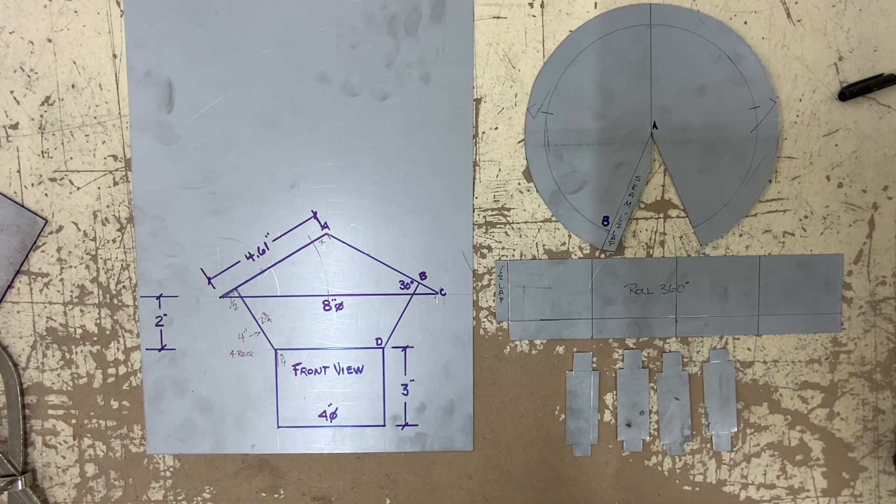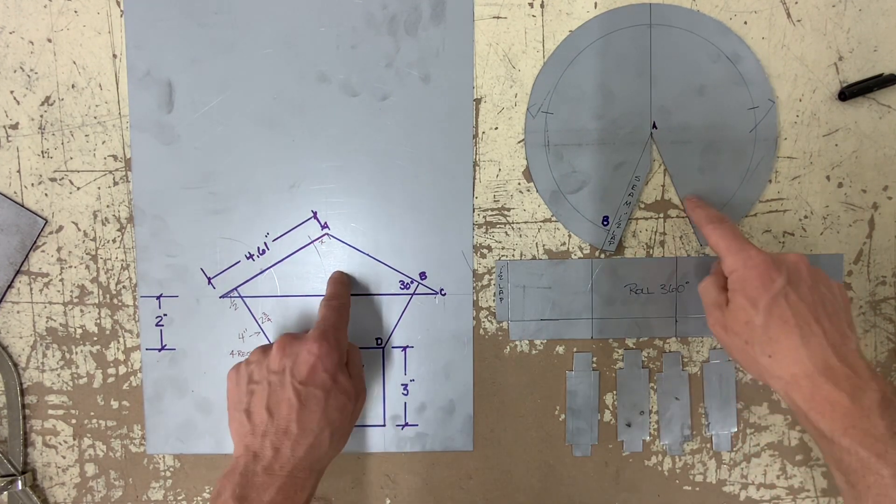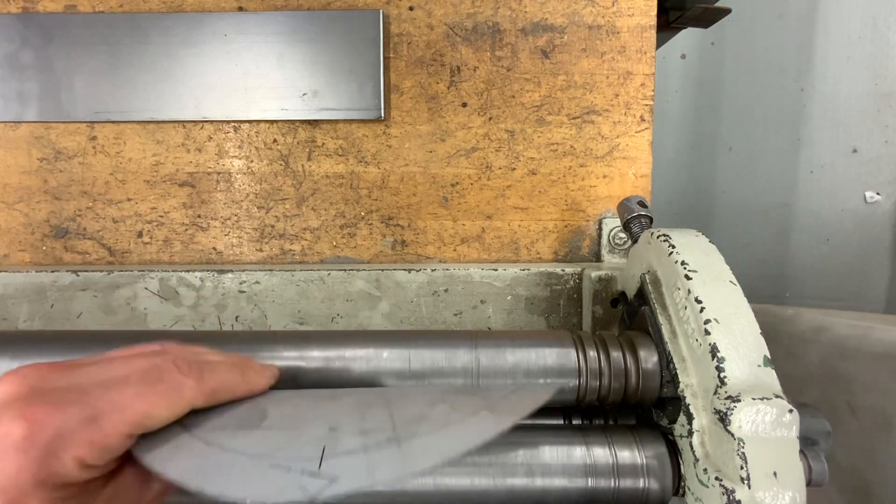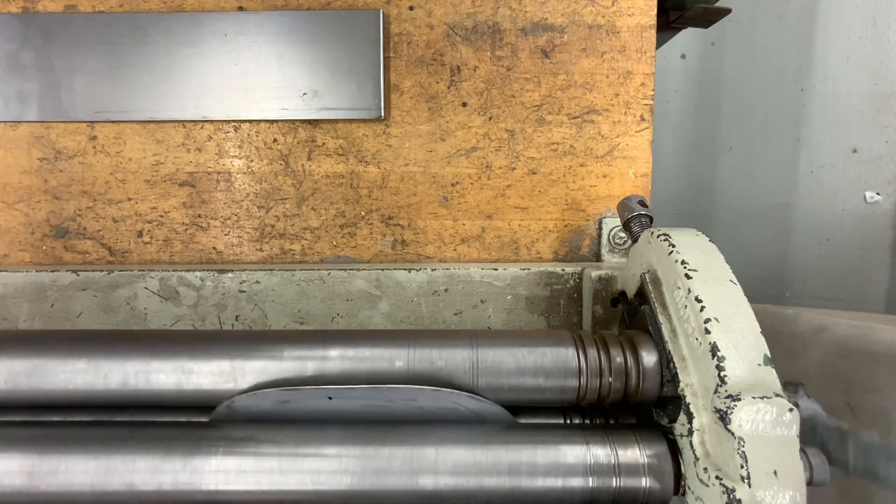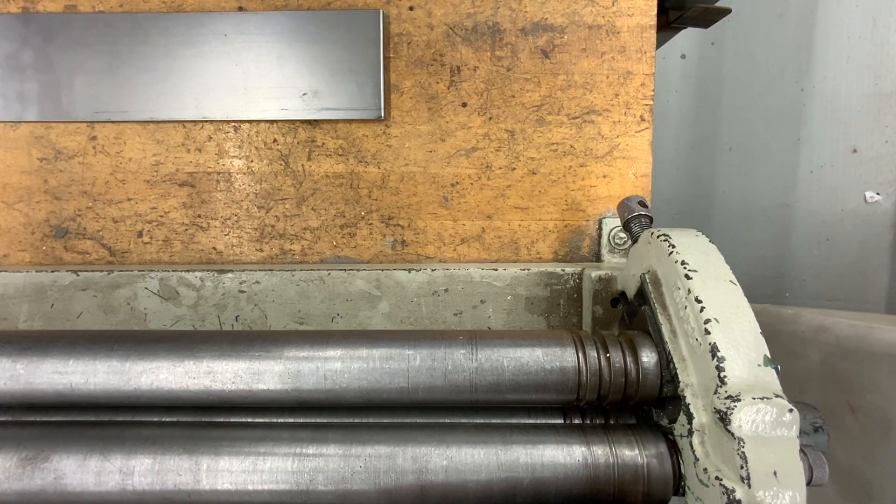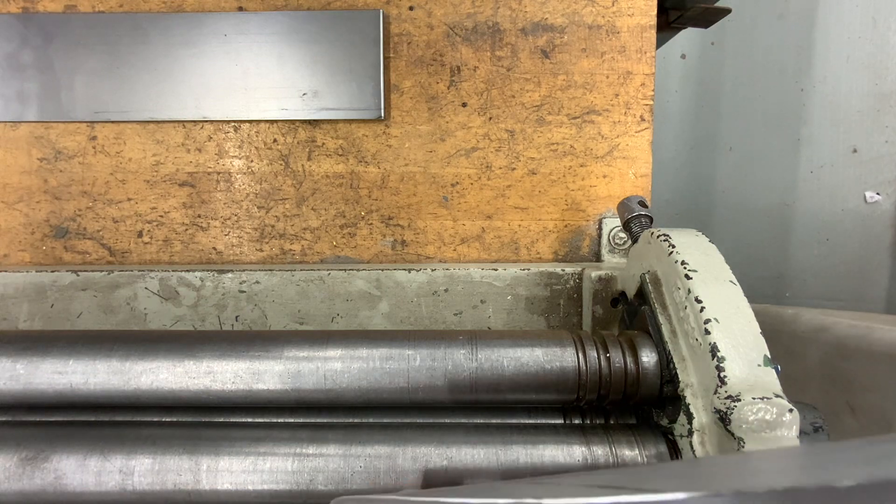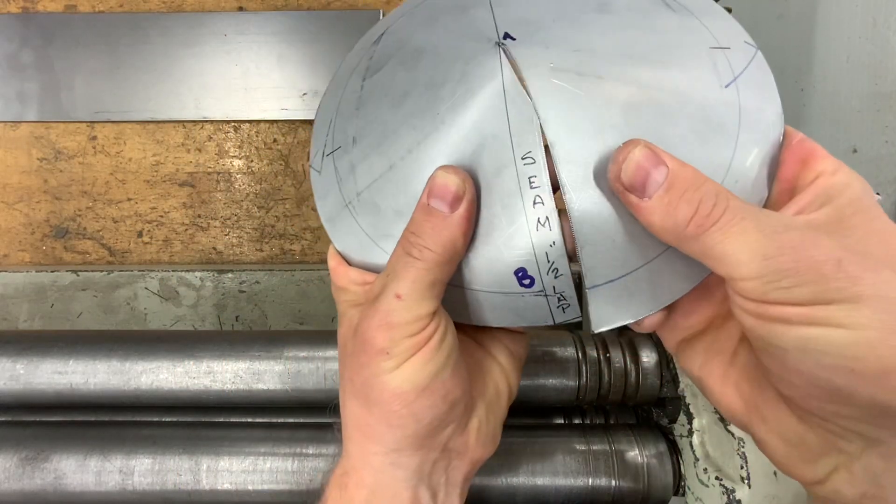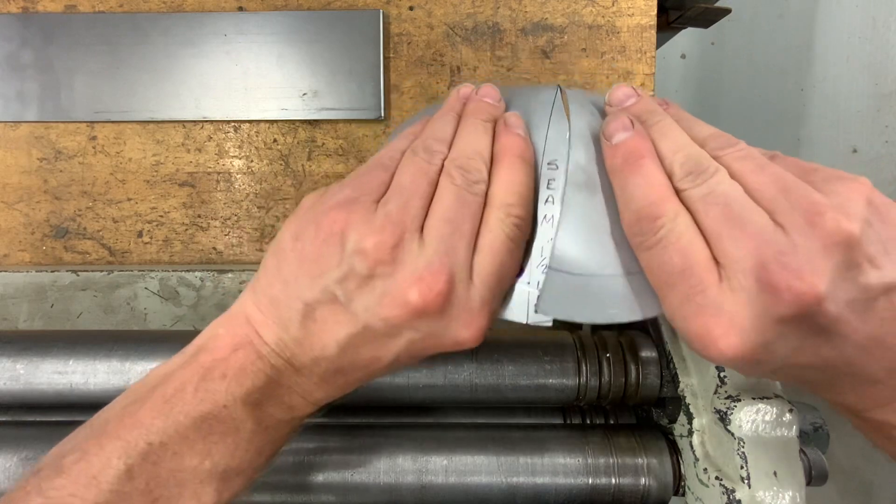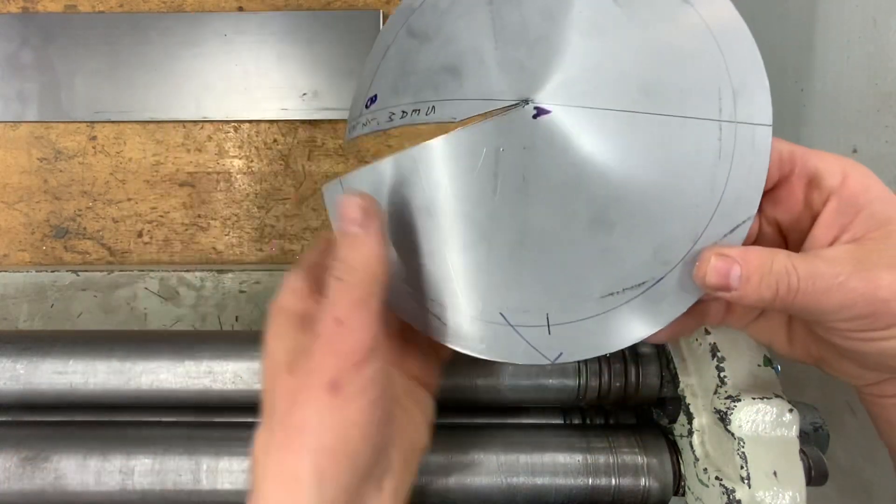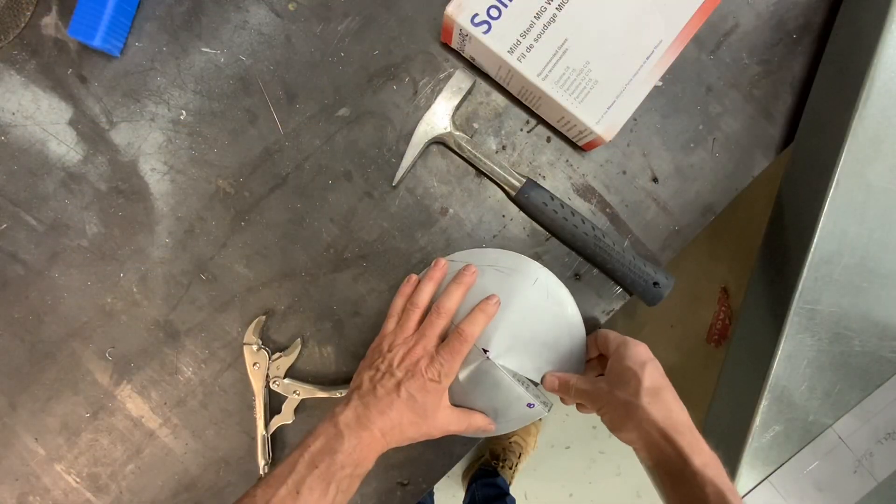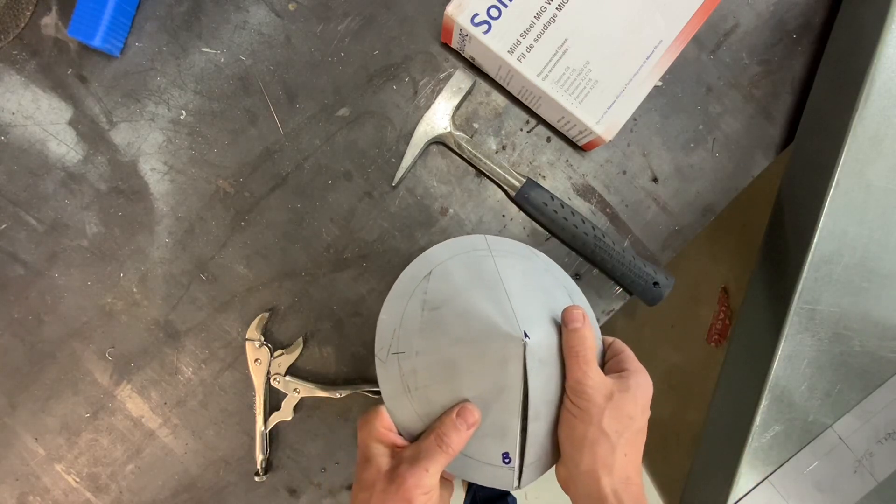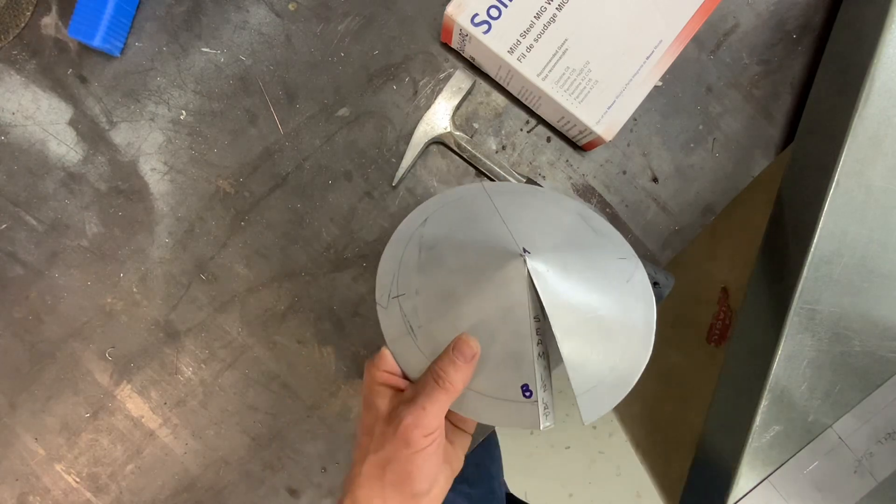So these are the pieces that you need to complete the rain cap. So now I'm going to go to the roller, and right now I'm just simply running the cap through the rollers in a few different directions to soften the metal to allow me to pull it together.